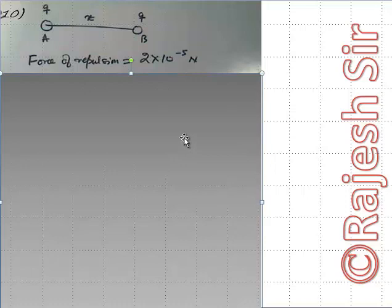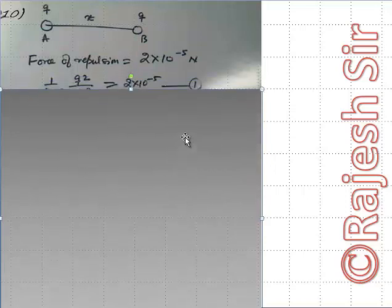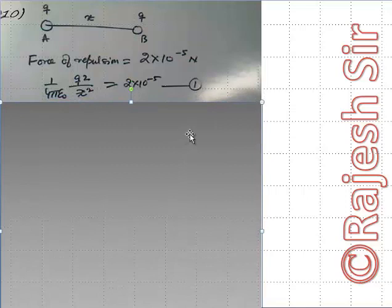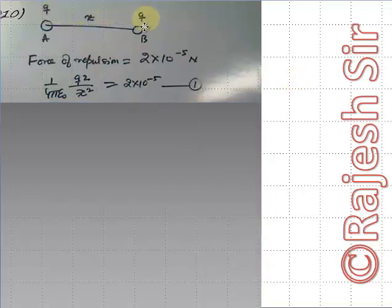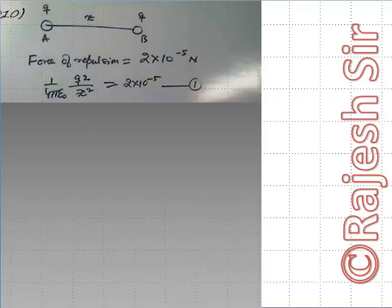The force of attraction or repulsion between any two charged bodies is given by the formula F = 1/(4πε₀) × Q1×Q2 / R². Here Q1 equals Q and Q2 equals Q. So substituting, we get 1/(4πε₀) × Q² / x², and this force of repulsion equals 2×10⁻⁵ Newton.